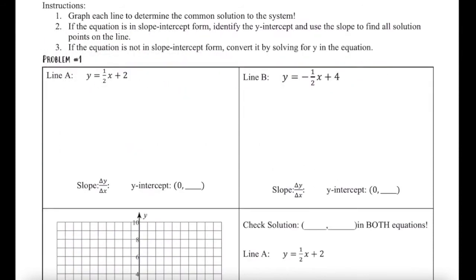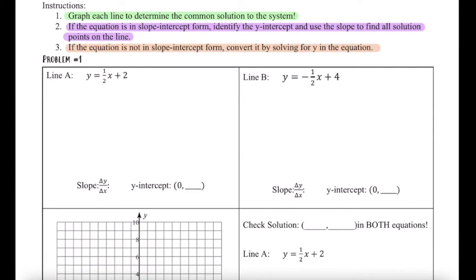Looking at our first problem here, the directions ask us to graph each line to determine the common solution to the system. If the equation is in slope-intercept form, we identify the slope and y-intercept and find all solution points on the line. And if it is not in slope-intercept form, we're going to convert it.